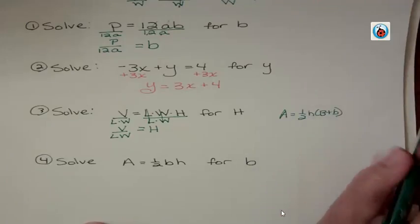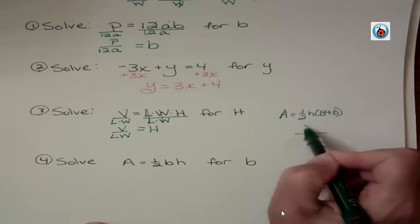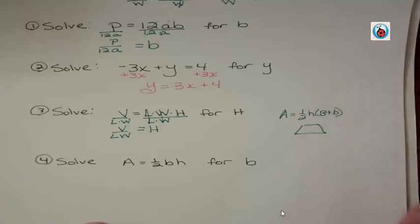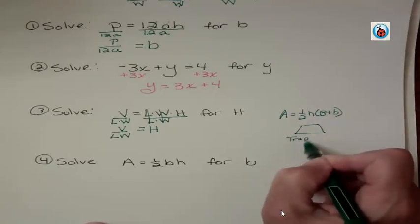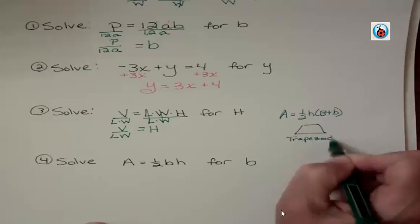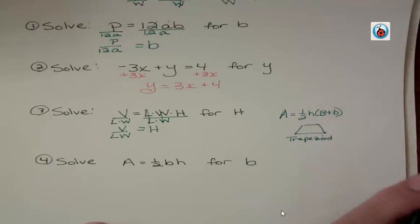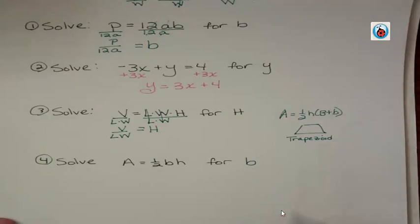Area equals 1 half H big B plus little B. And I was totally stumped. It's trapezoid. I could draw the picture. I could not think of the term for that. And actually, I had to go look on the internet. It was totally gone from my memory banks. And I must have used that and taught that formula literally a thousand times in my life. So that's an old age thing, I think.